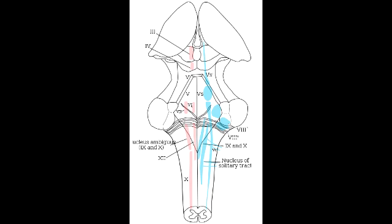What is nucleus solitarius? Nucleus solitarius is a series of nuclei forming a vertical column of gray matter embedded in the medulla oblongata.